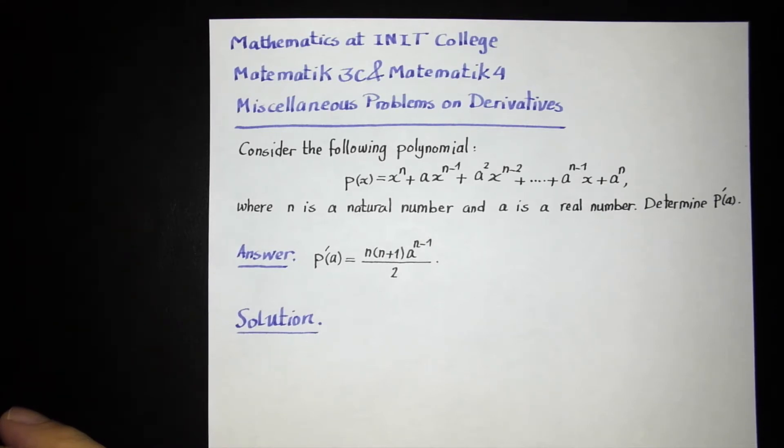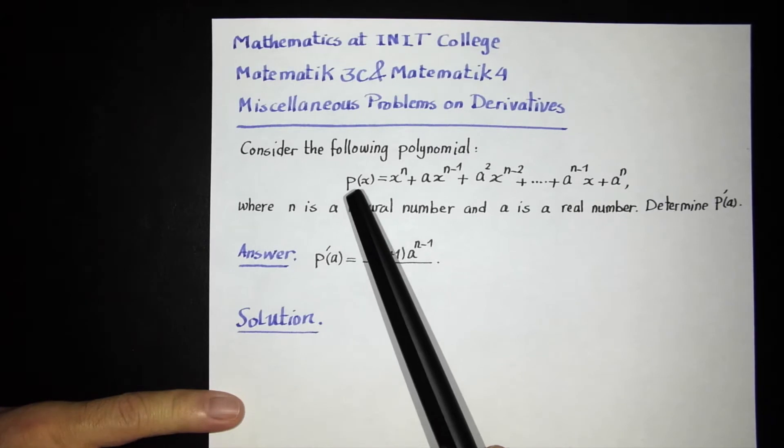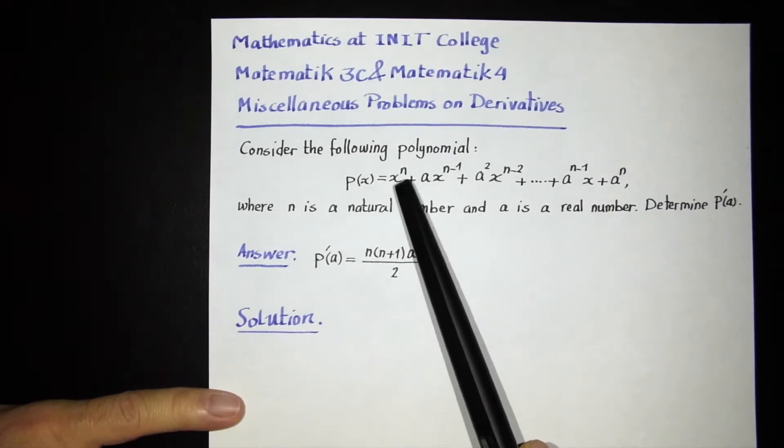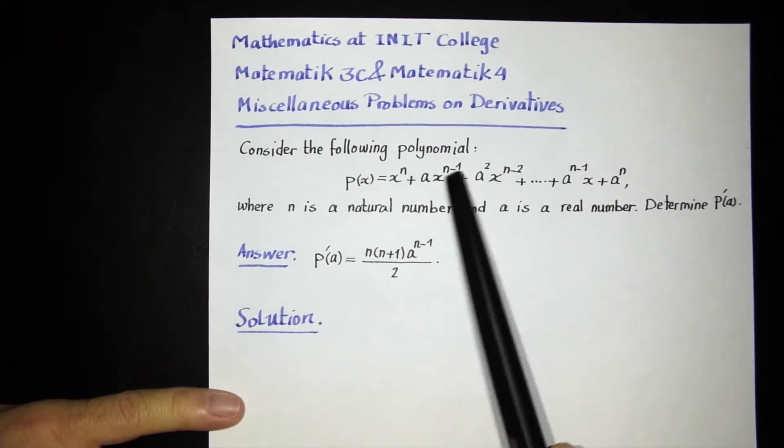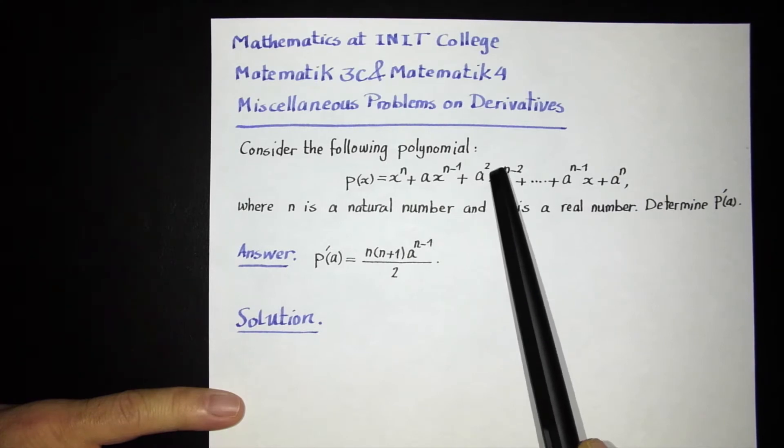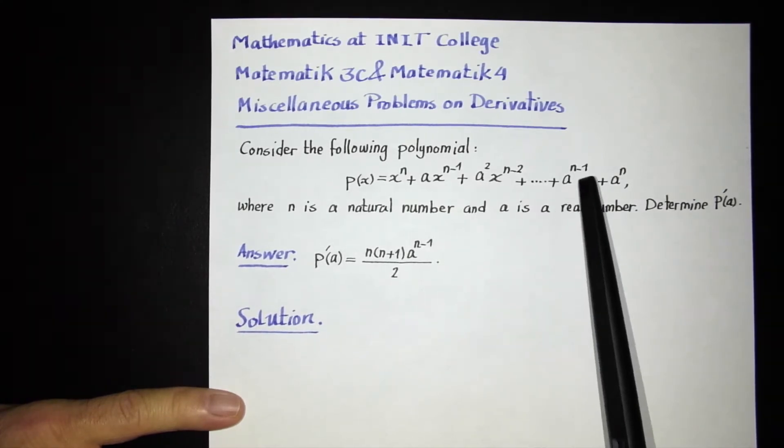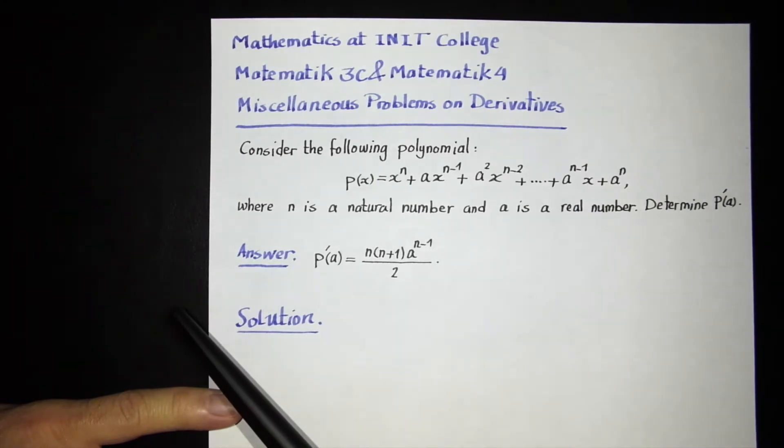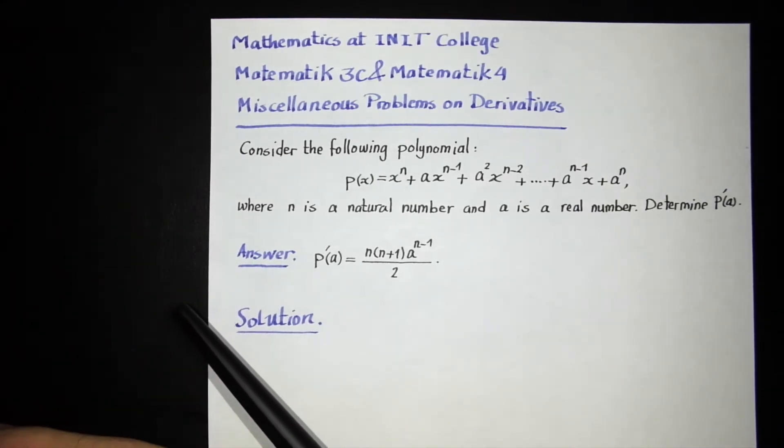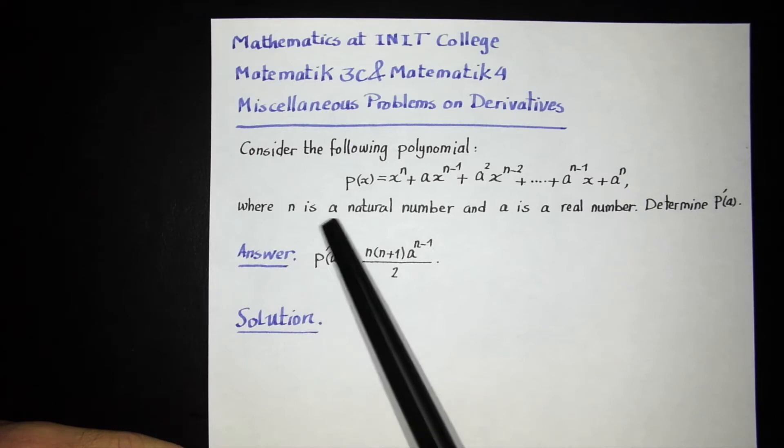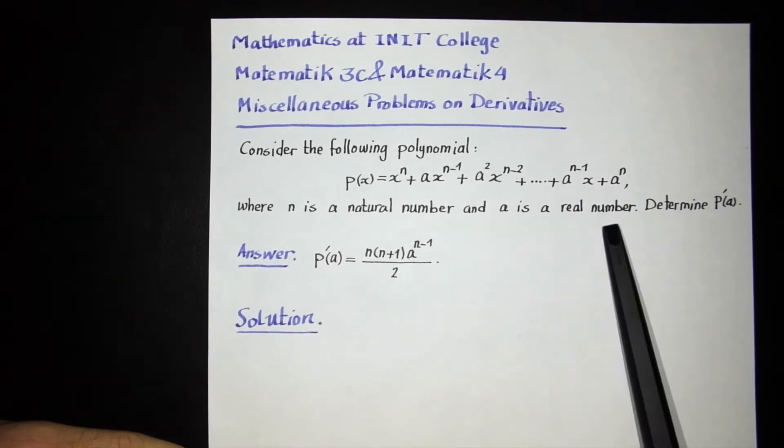Consider the following polynomial: P(x) equals x to the n plus a times x to the n minus 1 plus a squared times x to the n minus 2 up to a to the n minus 1 times x plus a to the n, where n is a natural number and a is a real number.